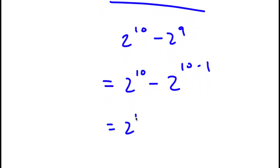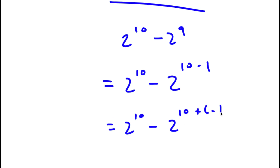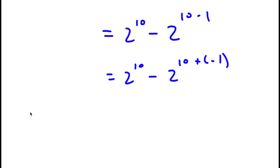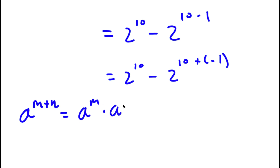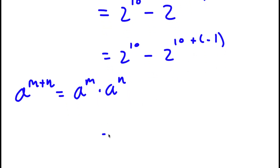I can rewrite this as 2 to the power of 10 minus 2 to the power of 10 plus negative 1. If I have something in the form a to the power of m plus n, this is equal to a to the power of m times a to the power of n. So 2 to the power of 10 plus negative 1 is simply equal to 2 to the power of 10 minus 2 to the power of 10 times 2 to the power of negative 1.